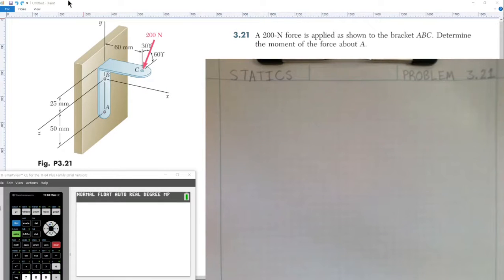Okay guys, welcome to today's lesson in statics. Today we're covering problem 3.21 from chapter 3. A 200 Newton force is applied as shown to the bracket ABC. Determine the moment of the force about A.